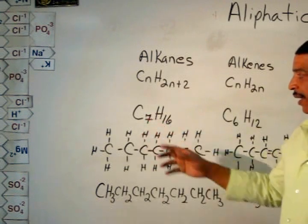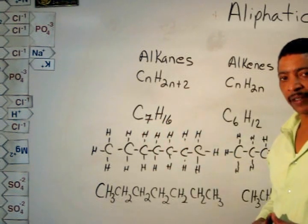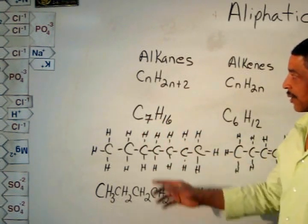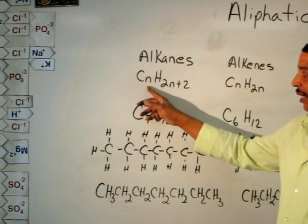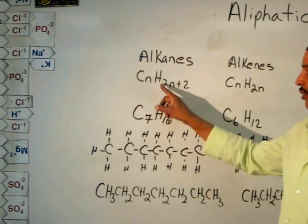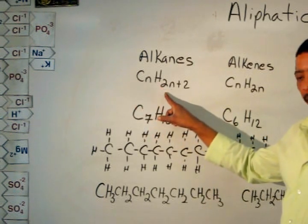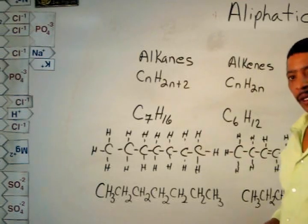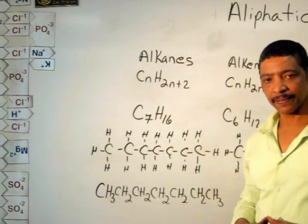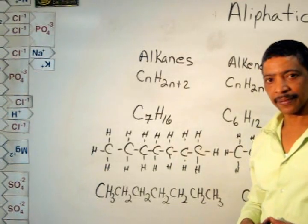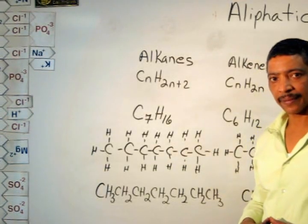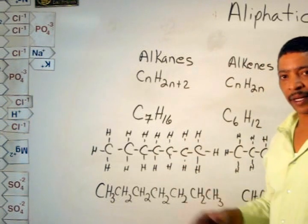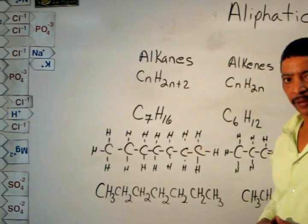This alkane contains 7 carbon atoms. Therefore, if n is 7, then H is 2 times 7, which is 14, plus 2, which is 16. This compound is known as heptane.